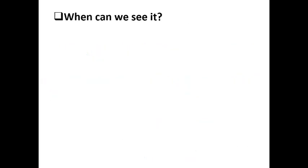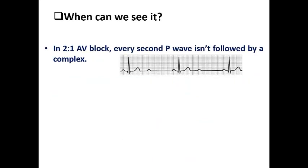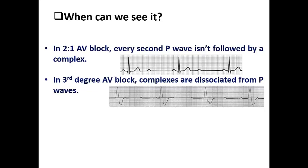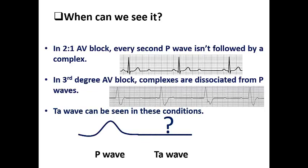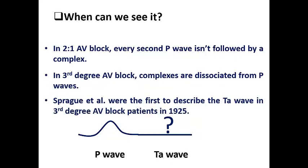The second question: when can we see it? In 2:1 AV block, every second P wave is not followed by a QRS complex. In 3:1 or complete third-degree AV block, QRS complexes are dissociated from P waves, so many P waves are not followed directly by a QRS complex. In this case, the TA wave can be seen following the P wave. The TA wave was first described by Spragital in 1925 in patients with third-degree AV block.